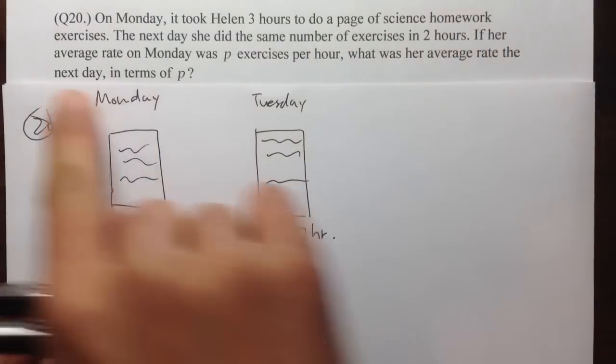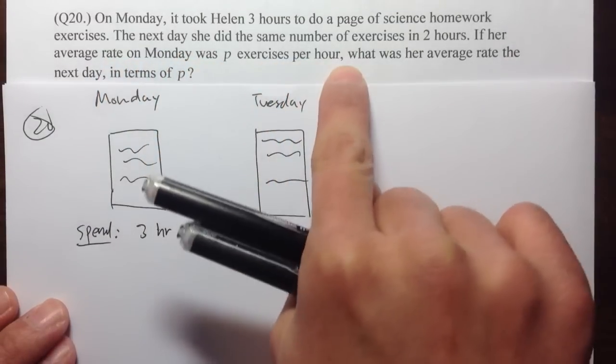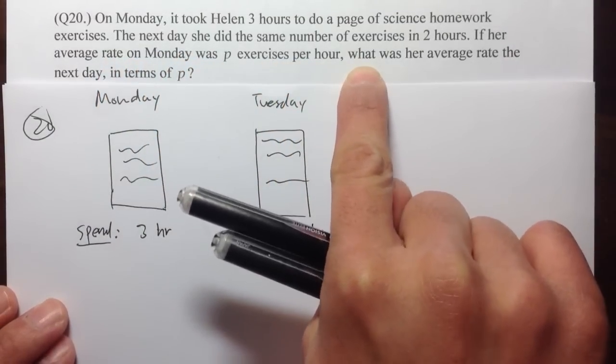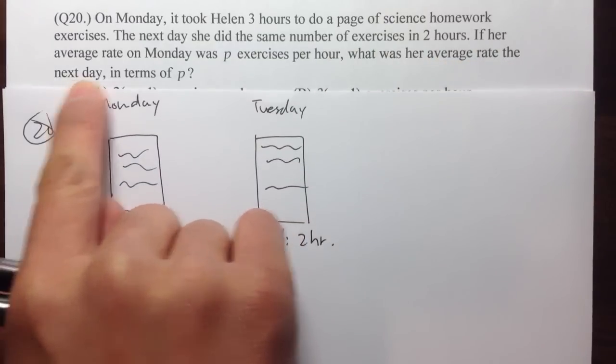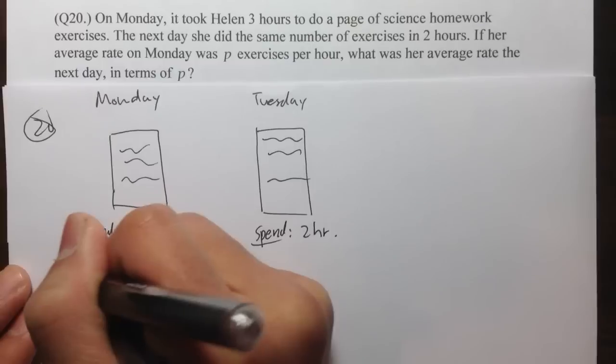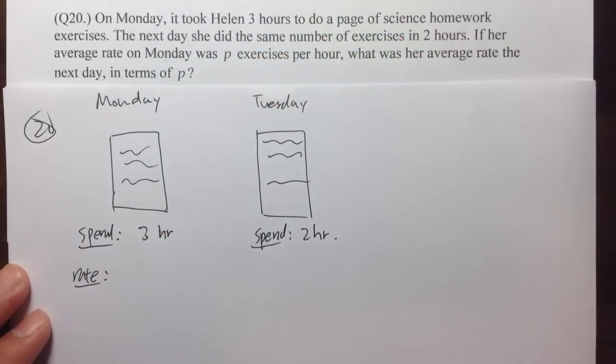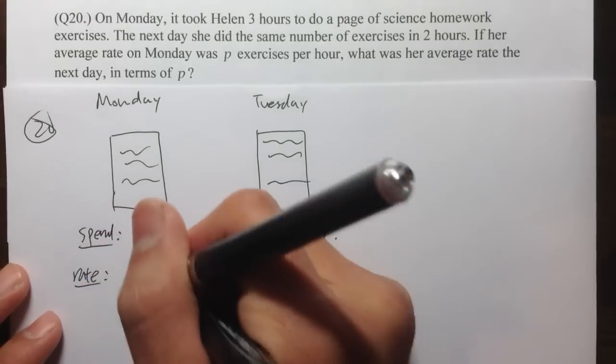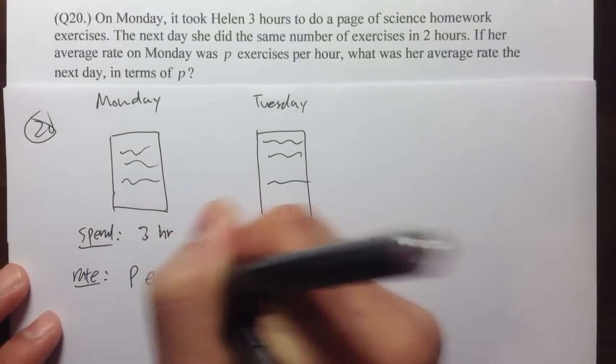And right here, it says, if her average rate on Monday was P exercises per hour, then the question is asking us to find out what was her average rate the next day in terms of P. So it says right here, the rate, it's P exercises per hour.